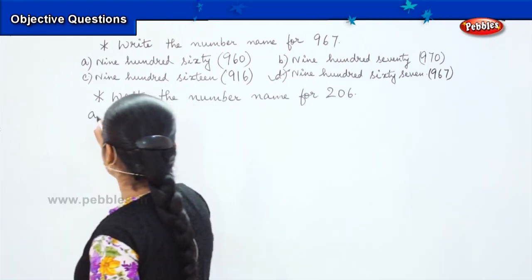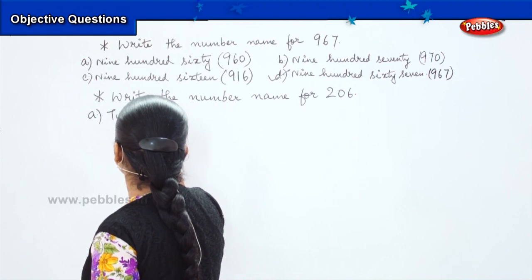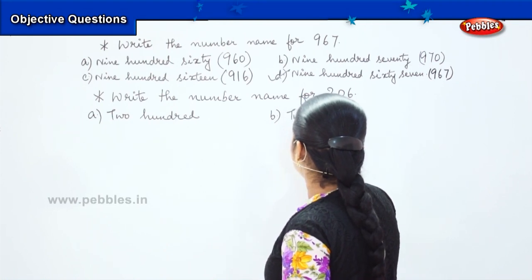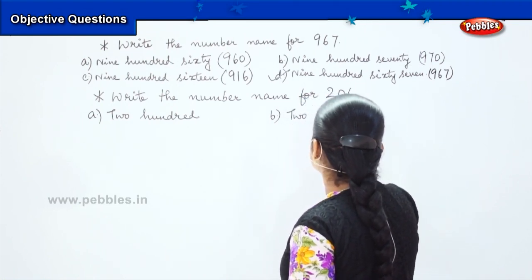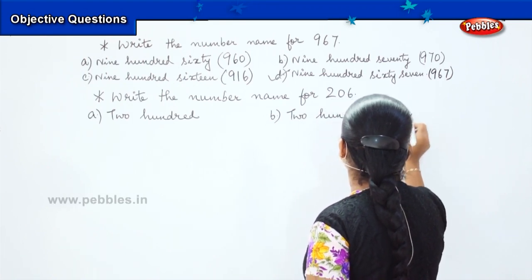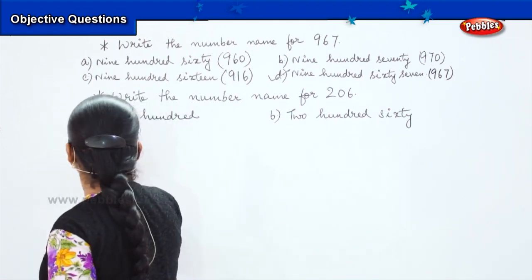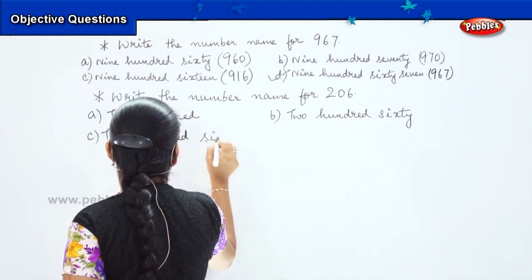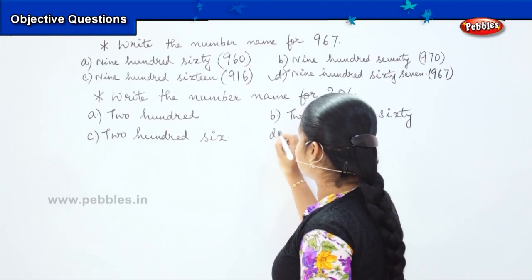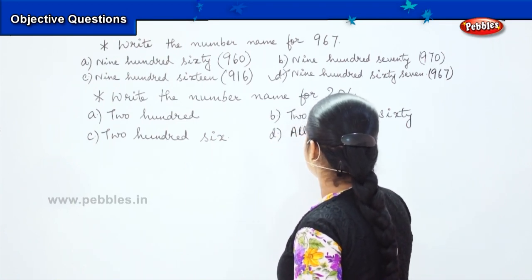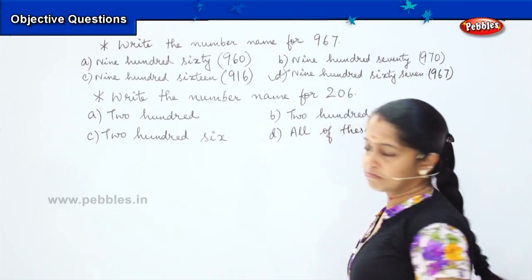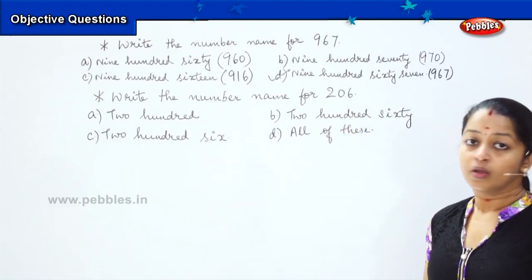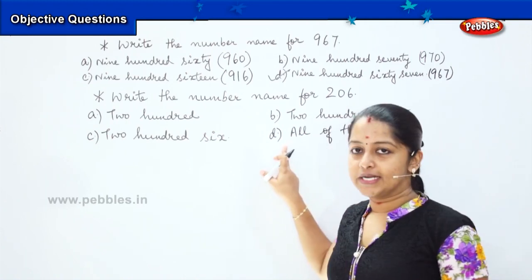The options are: option A is 200, option B is 260, option C is 206, and option D is all of these. As I told you earlier, is it possible that one particular number has so many number names? No, that is not possible. So option D is ruled out.